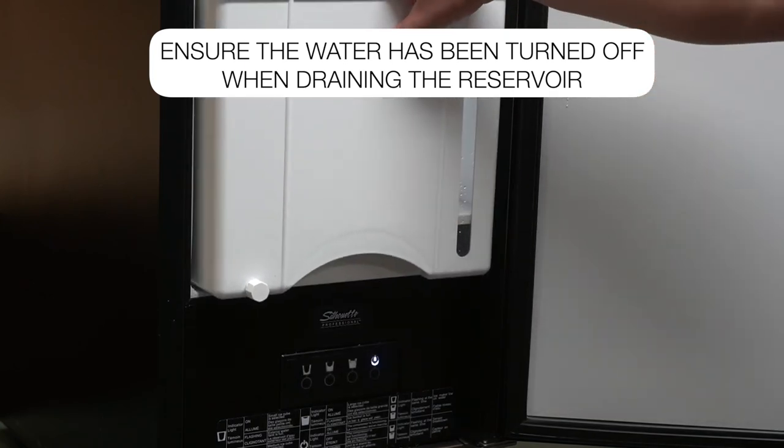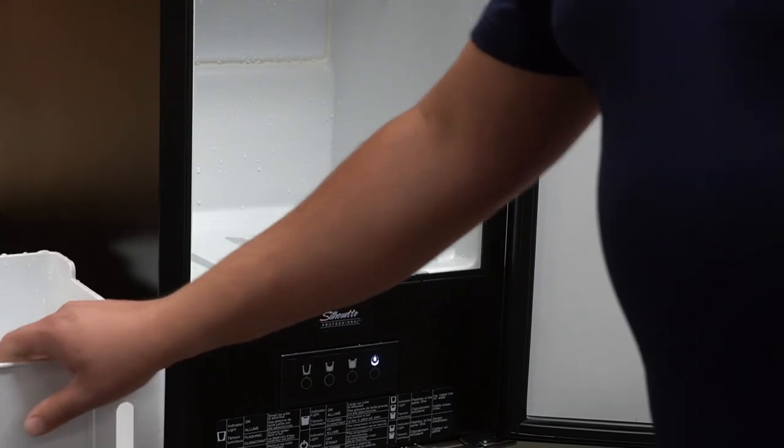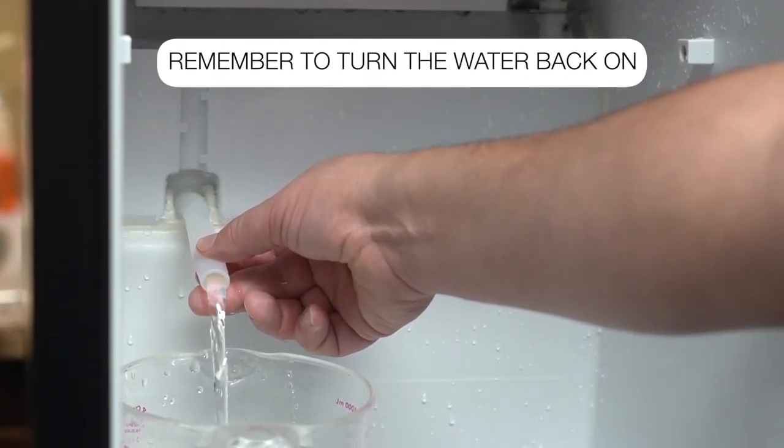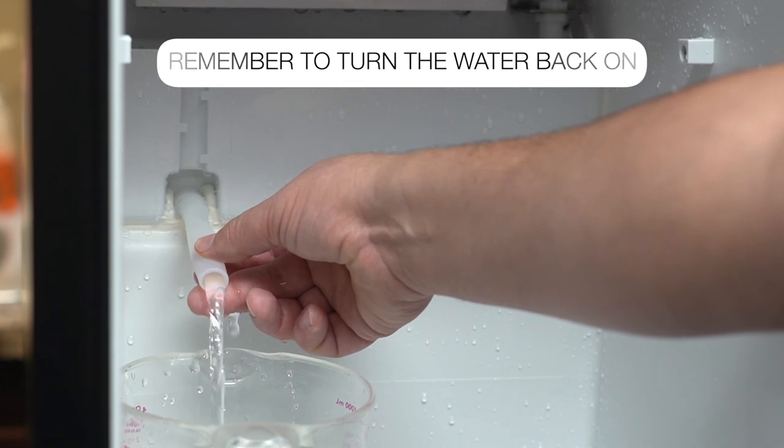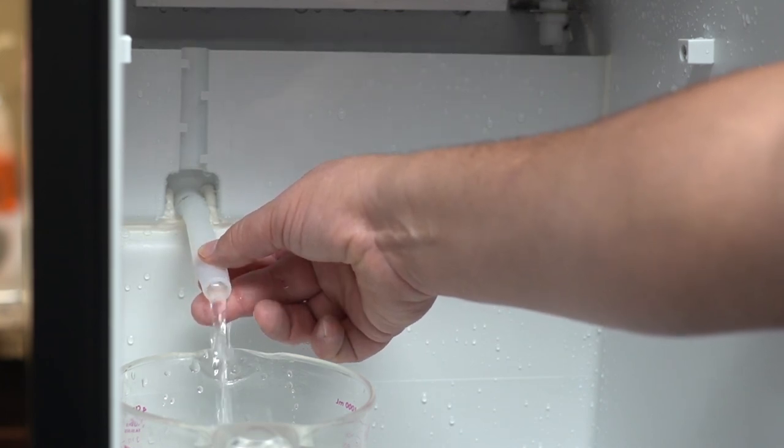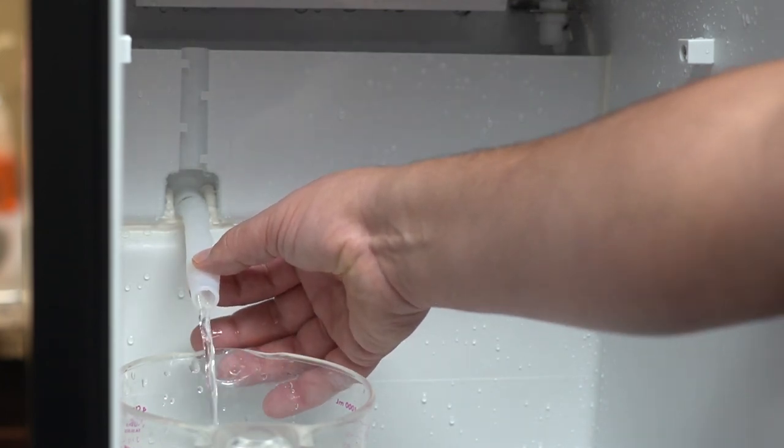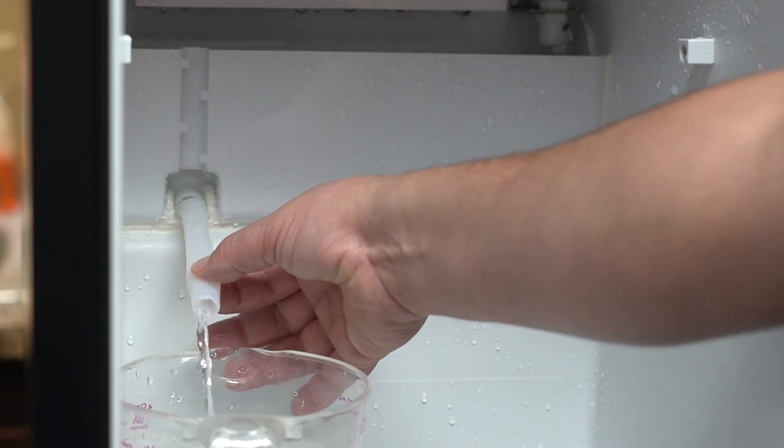Discard the seven or eight batches of ice that you've made. Now you're going to drain the reservoir for a second time. What this does is it removes any of the vinegar water solution from the reservoir and allows you to start with fresh water.